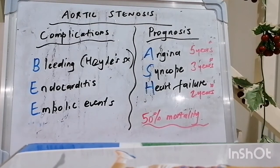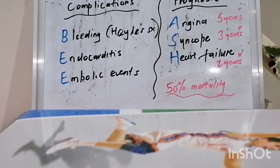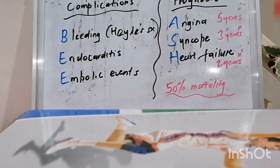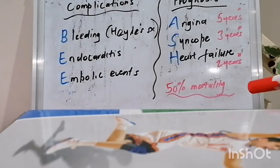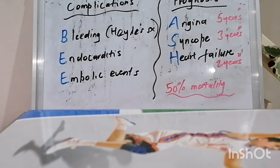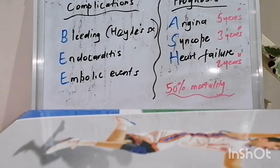When we prognosticate aortic stenosis, we look for three primary features: angina, syncope, and heart failure. If the patient has angina, that portends 50% mortality at five years. If they have syncope, that portends 50% mortality in three years. And if they have concomitant heart failure, that portends 50% mortality in two years.